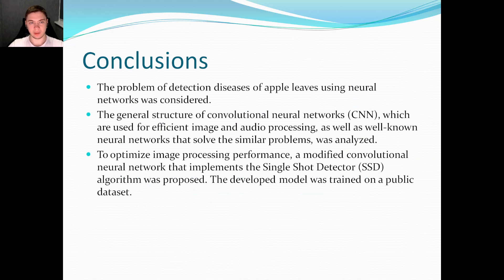Conclusions. The problem of detection of diseases of apple leaves using neural networks was considered. The general structure of convolutional neural networks, which are used for efficient image and audio processing, as well as well-known neural networks that solve similar problems, was analyzed. To optimize image processing performance, a modified convolutional neural network that implements the single-shot detector algorithm was proposed. The developed model was trained on a public dataset. Thank you for your attention.